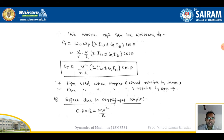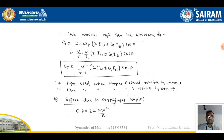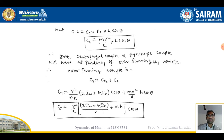The positive sign is used when the engine and wheel rotate in the same direction; the negative sign is used when they rotate in opposite directions. Case B: Effect due to the centrifugal couple. The centrifugal force is Fc = mv²/R. The centrifugal couple is: Cc = Fc·h·cosθ = (mv²/R)·h·cosθ.